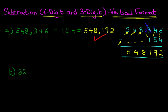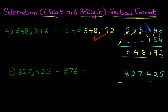We have got 827,425 minus 876. The first step is we are going to rewrite the question in the vertical format. So, 827,425 minus 876. Let's do the subtraction.